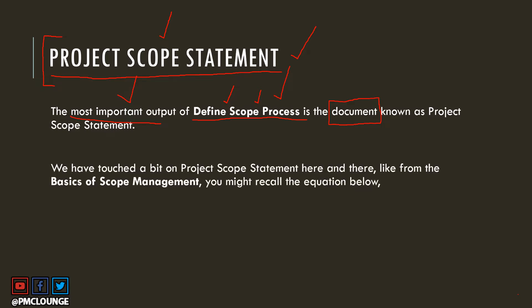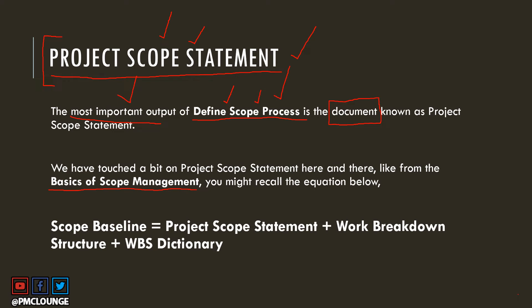We've touched on this topic here and there in several videos and articles. The fourth link in the description is the basics of scope management video, where we covered an equation: scope baseline equals project scope statement plus work breakdown structure plus WBS dictionary. So when you say you have baselined scope, it means you have three documents — the project scope statement, the WBS, and the WBS dictionary — that make up your scope baseline.